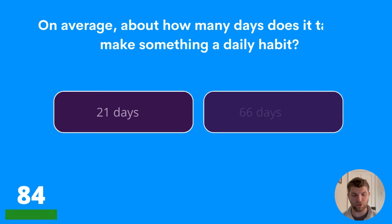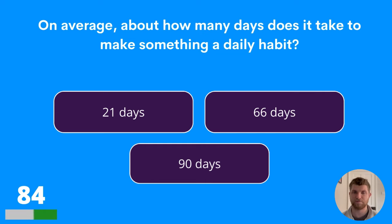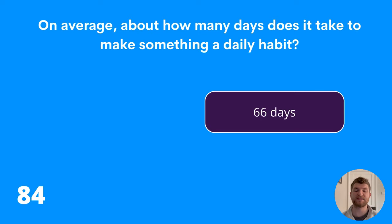Question eighty-four: on average, about how many days does it take to make something a daily habit? 21, 66, or 90 days? The answer is 66 days.